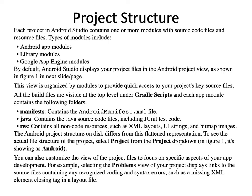Now we will discuss the project structure. Each project in Android Studio contains one or more modules with source code files and resource files. Types of modules include Android application modules, library modules, and Google App Engine modules. By default, Android Studio displays your project files in the Android project view, organized by modules to provide quick access to your project's key source files. All build files are visible at the top level under Gradle Scripts.